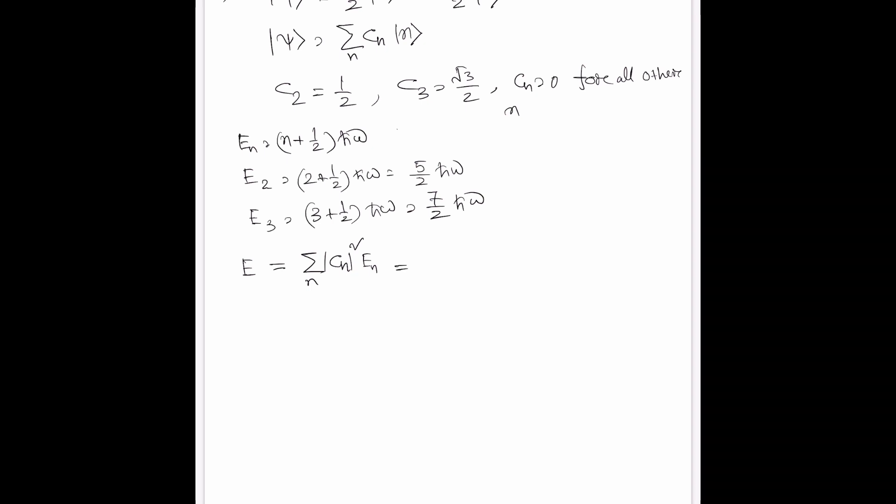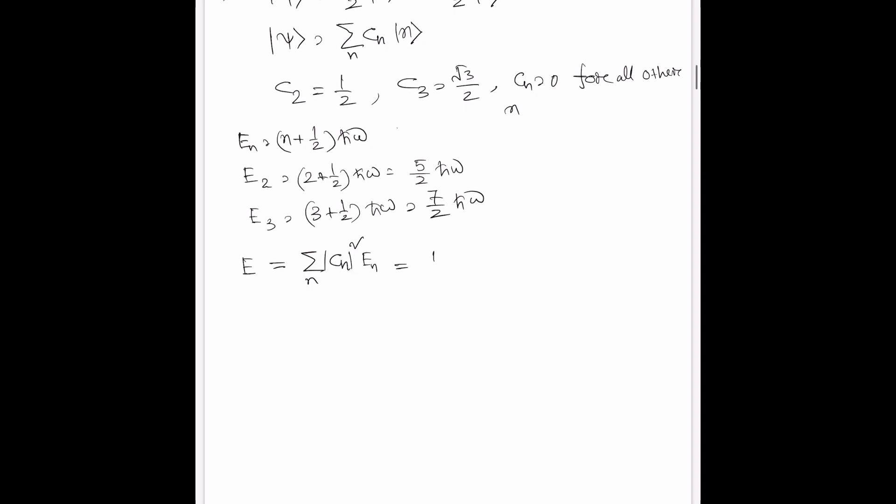Now here |c2|² is 1/4 times 5/2 ℏω plus |c3|² which is 3/4 times 7/2 ℏω.